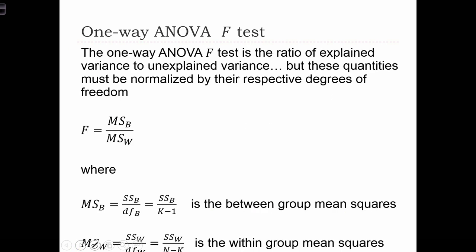So the F test is the ratio of explained variance to unexplained variance. But we can't just divide SSB over SSW. We're first going to standardize them into these mean squares, mean sum of squares between, and the mean sum of squares within. So to get the MSB, we're going to take the sum of squares between and just divide by the degrees of freedom of between. And the degrees of freedom for between is just k minus 1, the number of groups minus 1.